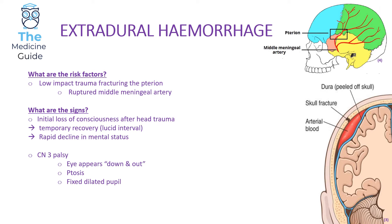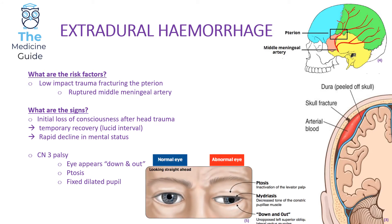In terms of signs and symptoms, the patient will initially lose consciousness after the blunt low impact head trauma, then temporarily recover — this is what's described as the lucid interval — but they will rapidly decline in GCS status. Another key classic feature of an extradural hemorrhage is third nerve palsy, where the eye appears in a down and out position. The patient will experience ptosis — droopiness of the upper eyelid — and a fixed dilated pupil.